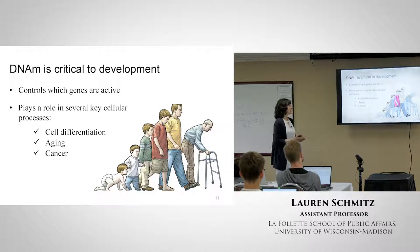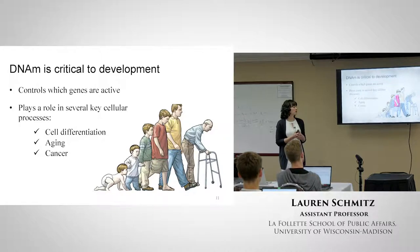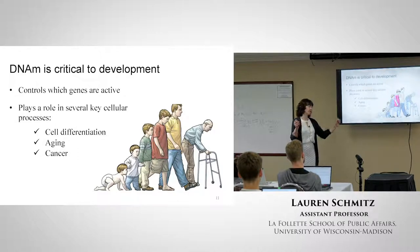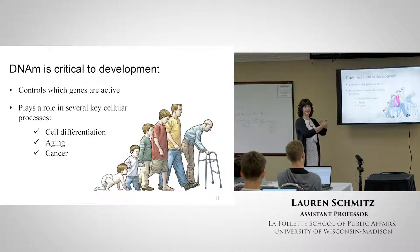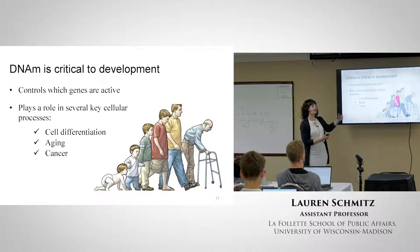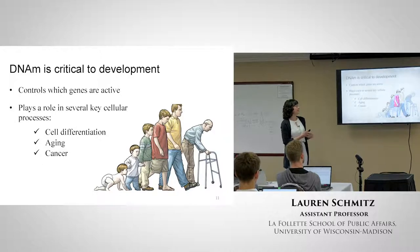DNA methylation is really critical to development because here we're controlling which genes are active with the epigenome. This plays a key role in several cellular processes, including cell differentiation - whether you're a blood cell or a skin cell. The epigenome regulates how cells differentiate from the time you're a fetus developing, and then maintains that cellular differentiation throughout your life course. Aging - which we'll talk about when we discuss epigenetic clocks - and cancer are big ones. It is very critical to development throughout the life course and to disease.